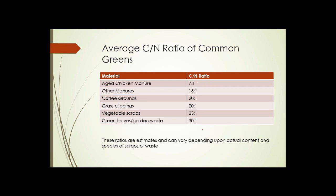Now look at this next chart. These are some common greens that might be used in composting. Chicken manure, 7 to 1. The previous chart showed us things with way too much carbon. Now we're looking at something that has way too little carbon. Other manures, 15 to 1. Coffee grounds, 20 to 1. That's pretty close to the ratio we're looking for. Grass clippings, 20 to 1. Vegetable scraps, 25 to 1. And green leaves and garden waste, about 30 to 1. These last two are pretty close to what we want as the ideal mix.